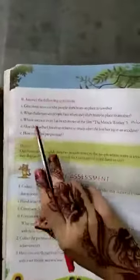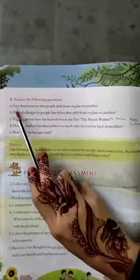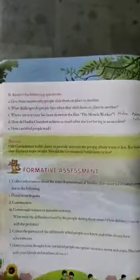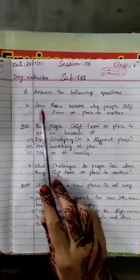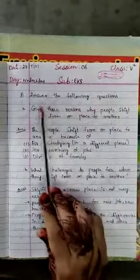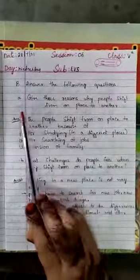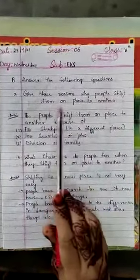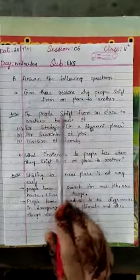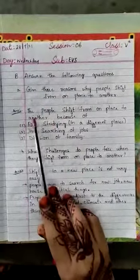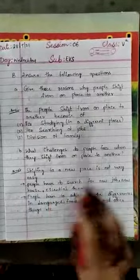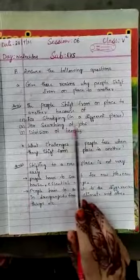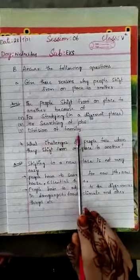Turn to page number 14 — Answer the following questions. There are 5 questions. You have to complete the second lesson question and answers in your notebook. First question: 'Give three reasons why people shift from one place to another.' The answer: people shift from one place to another because of, first, studying in different places; second, searching for jobs; third, division of family.